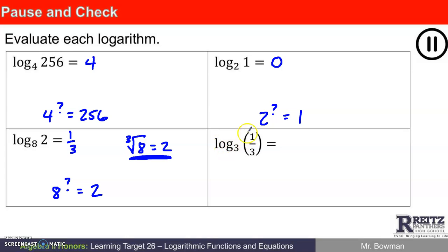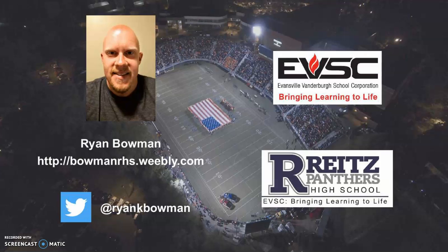This last example says log base 3 of 1/3. What power of 3 gives you 1 over 3? Well, 3 to the negative first is negative 1. Excuse me. 3 to the negative first is 1/3. So log base 3 of 1/3 is negative 1. Thanks for watching.